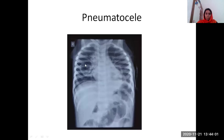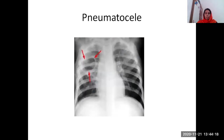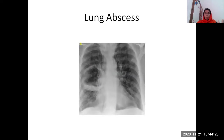Another thing is about the pneumatocele. What is this? This is most commonly seen in staph pneumonia. Staph will cause micro abscesses which coalesce, and then later you will get the formation of pneumatocele. Always differentiate between pneumatocele and abscess: in pneumatocele they have thin wall cavities, whereas in lung abscess you can see the thick wall. Can you make out a thick wall? This is a case of lung abscess with a thick wall cavity.